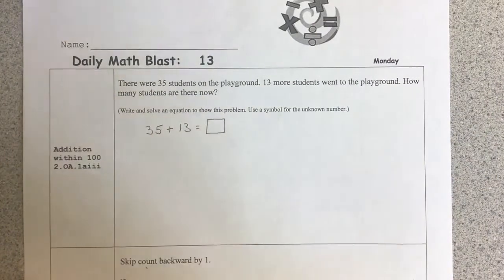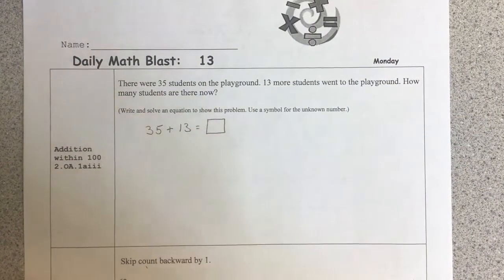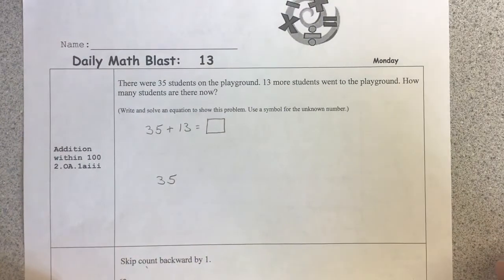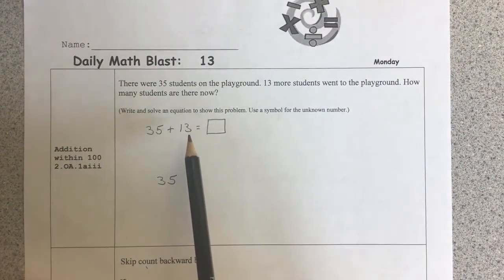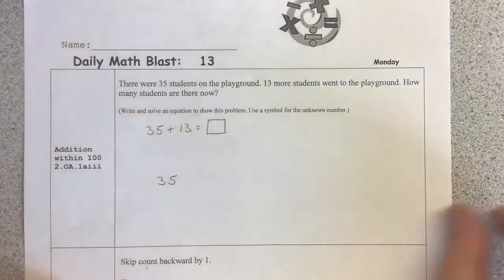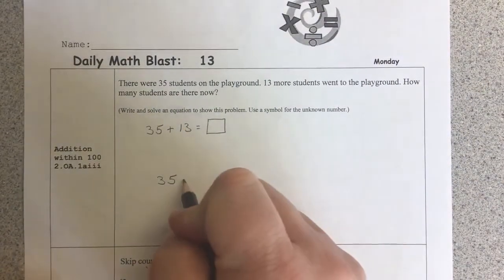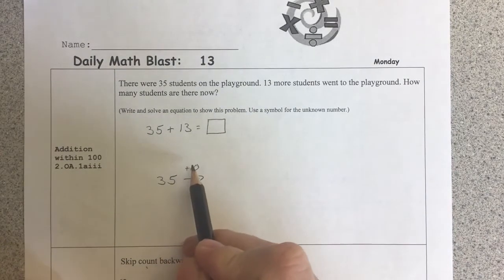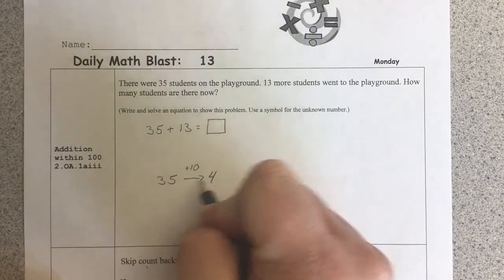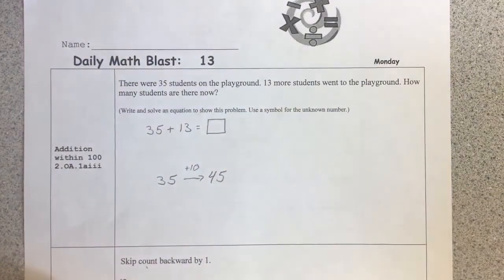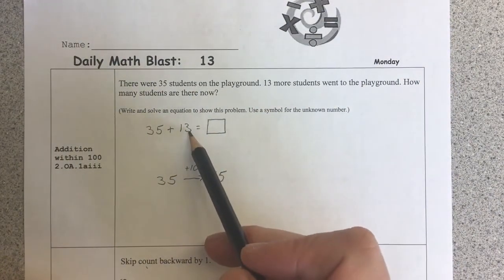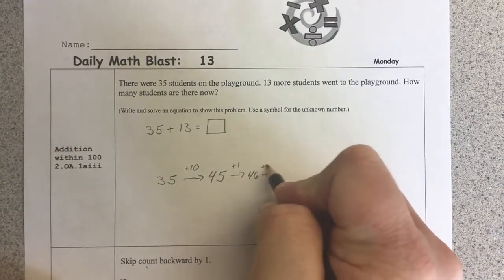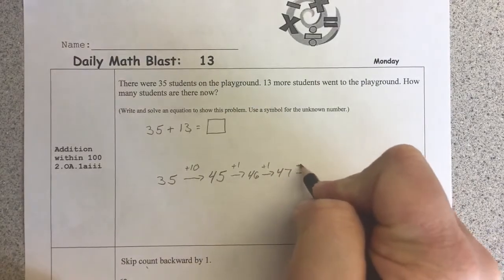Now is when I choose a strategy to solve this problem. Remember, your strategy may look different than mine. I'm going to use the arrow way. So I'm starting at 35. I need to make jumps or arrows equal to 13, but I can do it in any size pieces that work for me. The first thing I'm going to do is add the 10. So I have 3 tens plus 1 ten is 4 tens, and my 5 ones stay the same. I need to add 13, so I still have 3 ones to add. Plus 1 is 46, plus 1 is 47, plus 1 is 48.